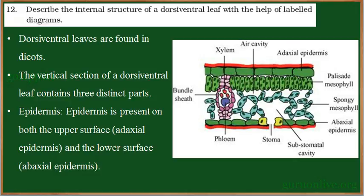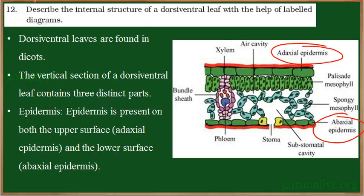The leaf is covered both on the dorsal and the ventral region by an outer protective layer called epidermis, present both on the upper surface as well as lower surface — called upper epidermis and lower epidermis. Based on this, we can divide the leaf into three parts: epidermis, mesophyll, and vascular bundles.